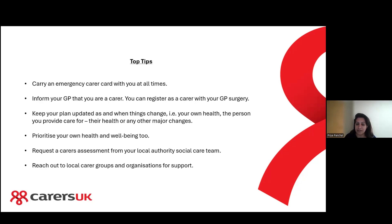Reach out to local carer groups and organisations for support. You can find them using the link for local carer groups shared earlier. Get in touch to see what type of support they can offer, and you can also speak to them specifically about contingency plans to see whether they have any further support they can provide with that.